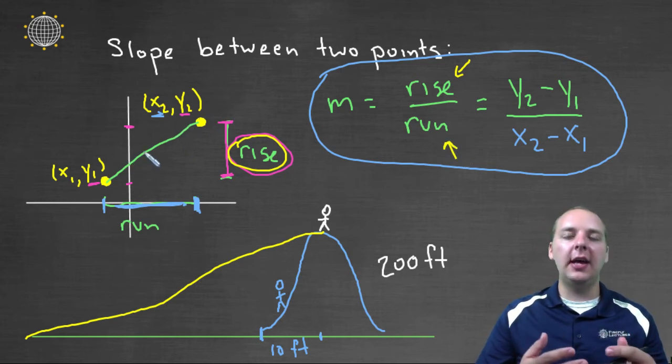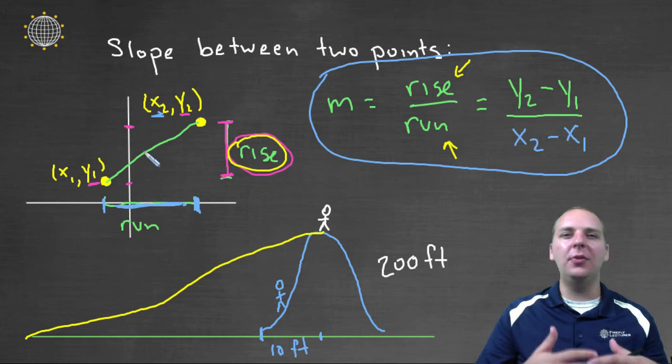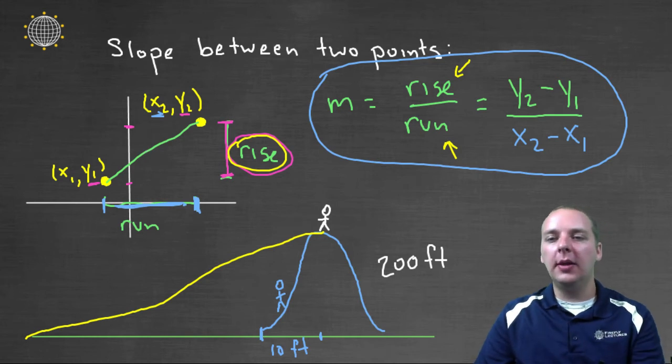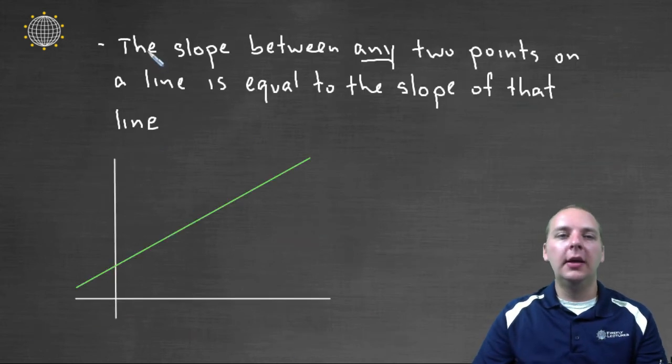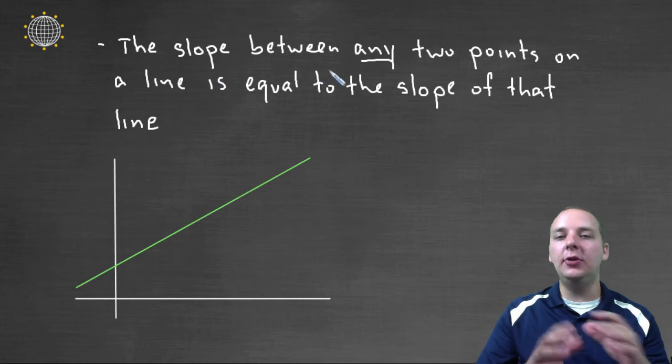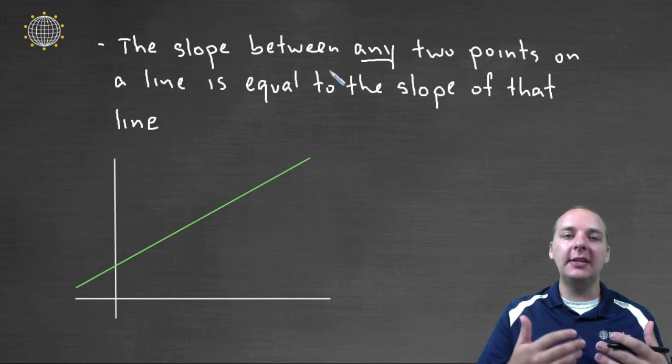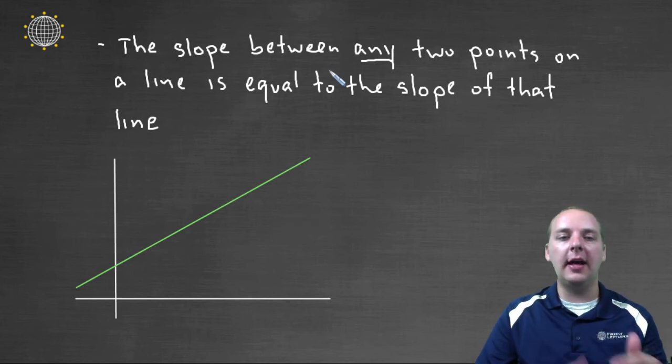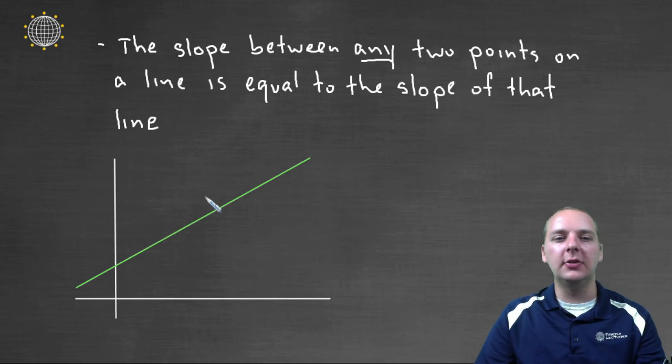Now you hear me say all that, and you say, well Devin, I don't really care what the slope is between two points, I thought we were talking about the slope of a line. Well, let me make that connection for you. The slope between any two points on a line is actually going to be equal to what we're going to call the slope of that line. Let me just draw you an example, because I know that sentence sounds a little confusing.